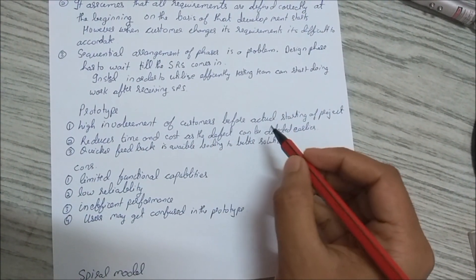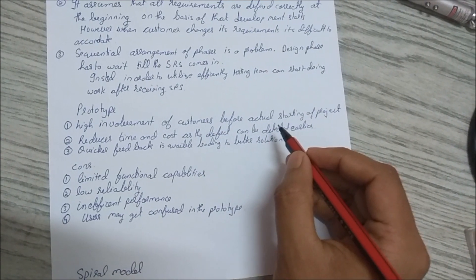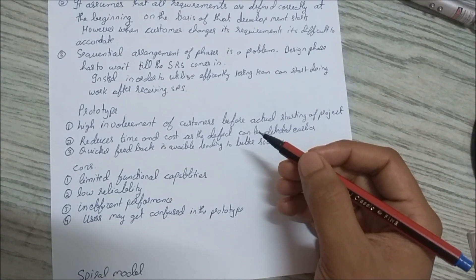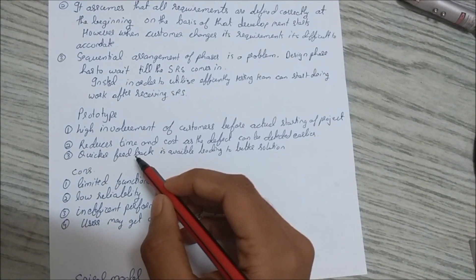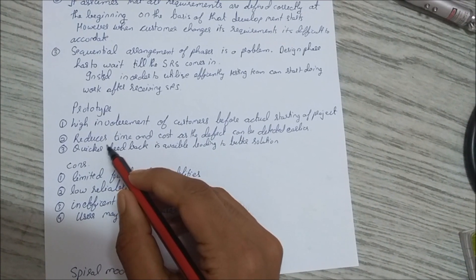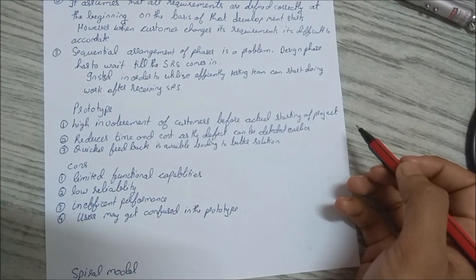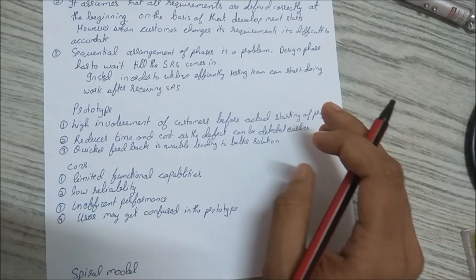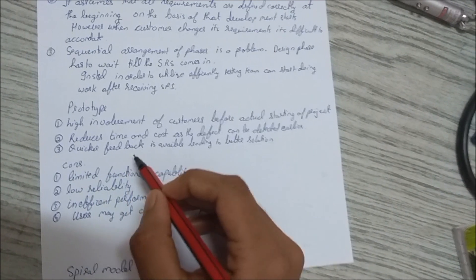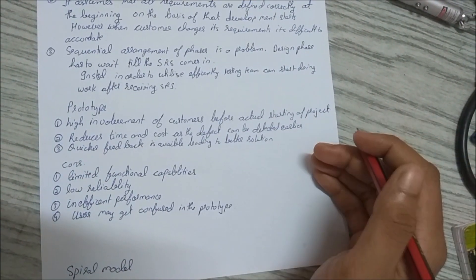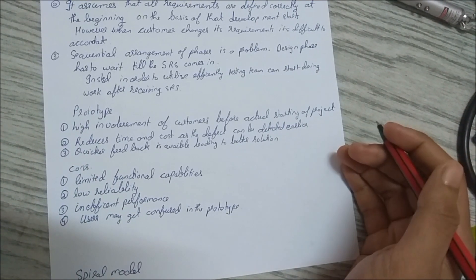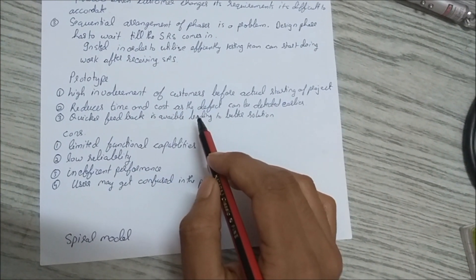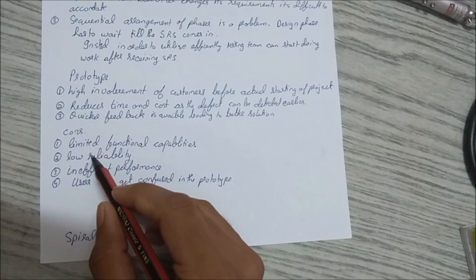Next we have the prototype model. In this there is high involvement of the customer — unless and until the customer is satisfied, we involve them, and after they are satisfied we start the development process. This reduces time and cost as defects can be detected earlier. Next, quicker feedback — if something goes wrong you get feedback on the spot from the client.